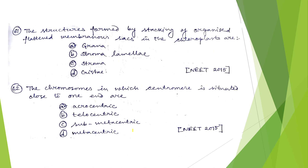Question 61: the structures formed by stacking of organized flattened membranous sacs in the chloroplast are — the flattened membranous sacs are thylakoids, and when they are stacked, the organization is known as grana. So the correct answer is option A — grana. The next question: the chromosome in which the centromere is situated close to one end is known as an acrocentric chromosome.